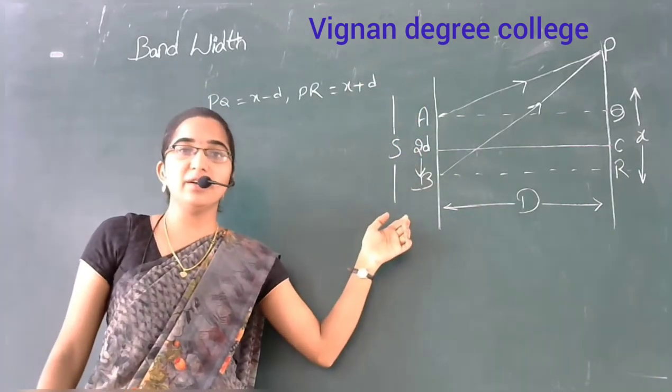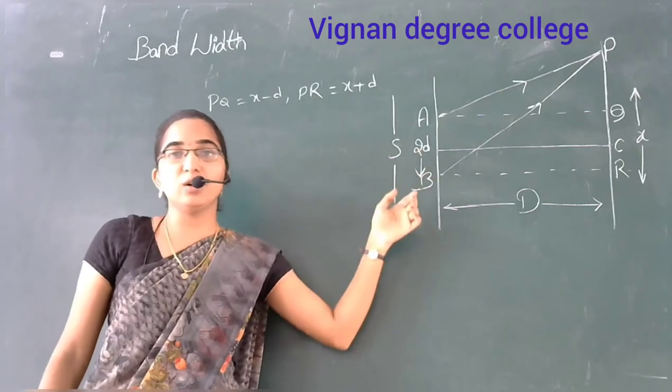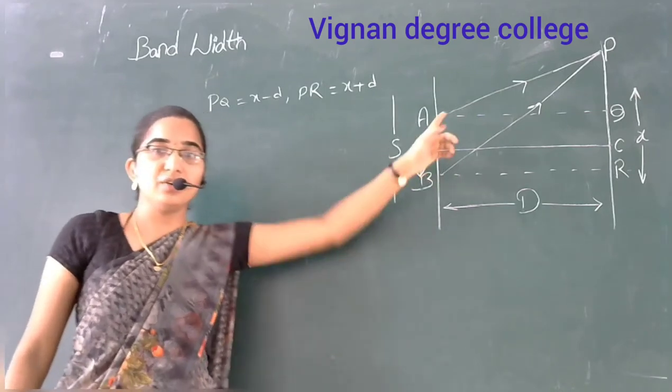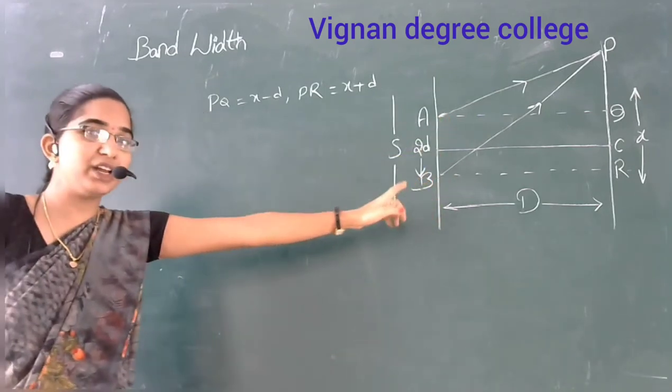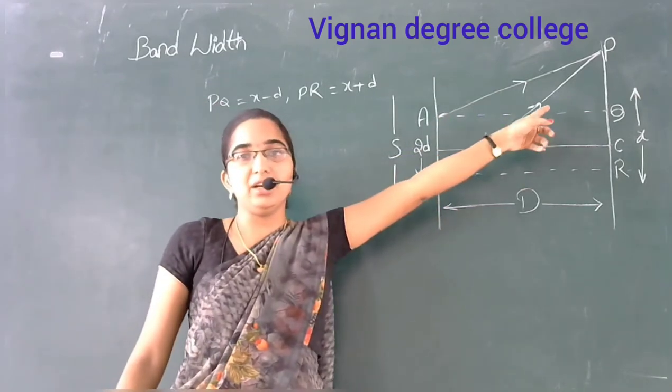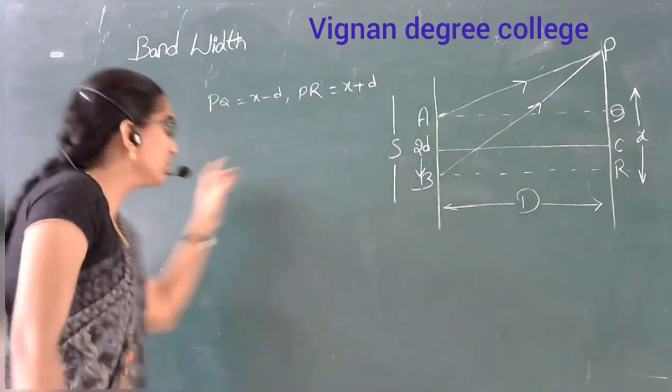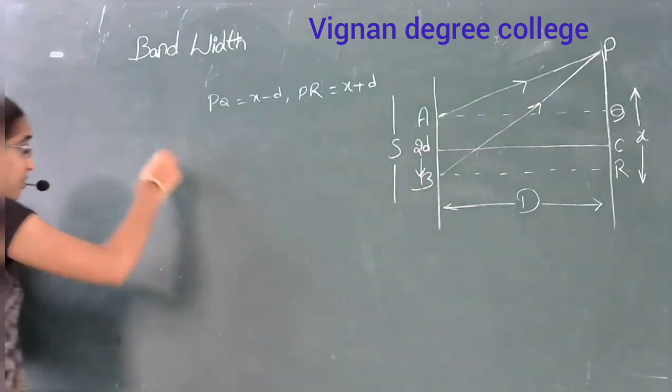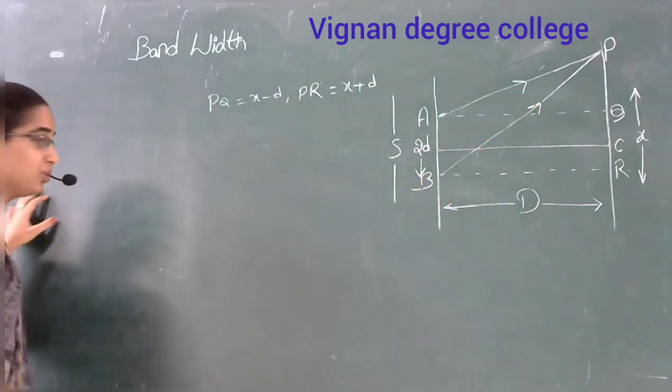A and B pinholes are very close, and P is the reaching point. There are two wave derivations to consider.